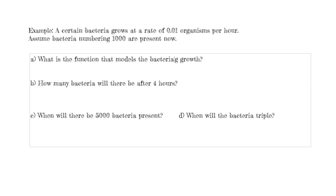In this example we'll look at a growth model. A certain bacteria grows at a rate of 0.01 organisms per hour. Assume bacteria numbering 1000 are present now. Our first task is to find the function that models the bacteria's growth. This is an exponential uninhibited growth function, so the format takes the standard form. Time represents hours, the initial value is 1000, and the growth rate K is 0.01. So the function is A(T) = 1000·e^(0.01T). That's our exponential growth function.